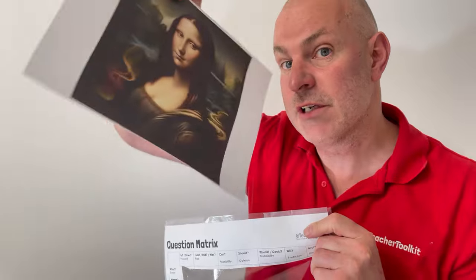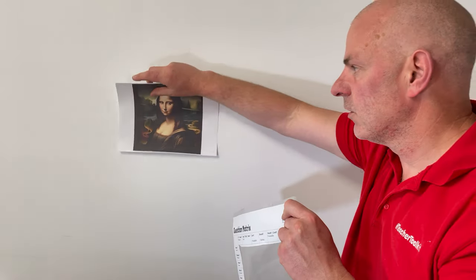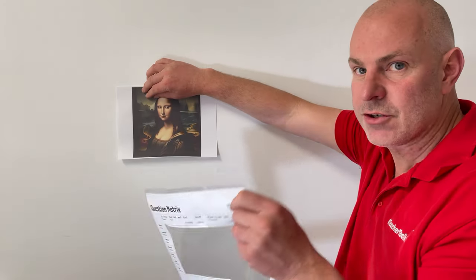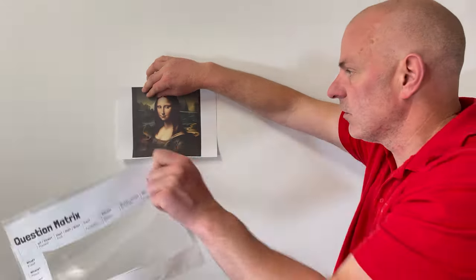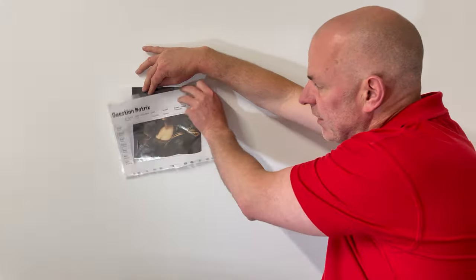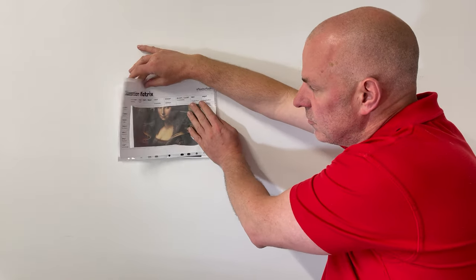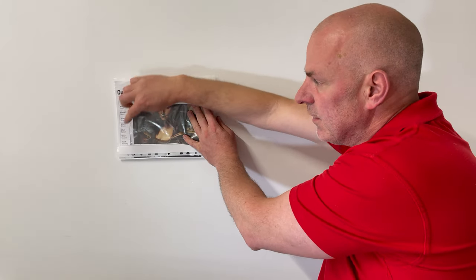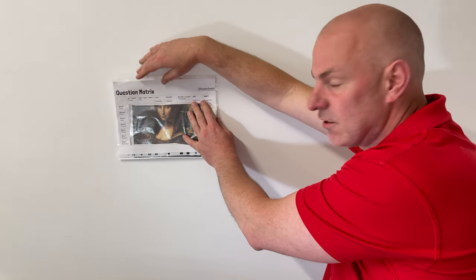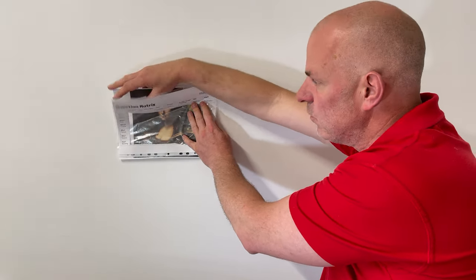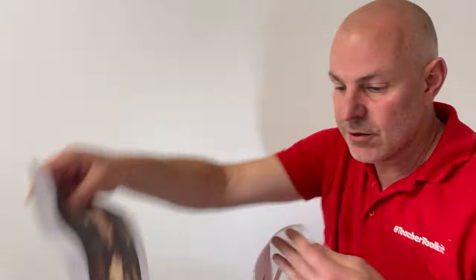Another way: I've got a picture of a Mona Lisa here. In the classroom, I can put this on the grid itself, but I can also put this over a piece of work on a student's table and use this to ask questions the same way.